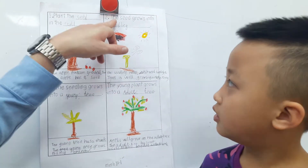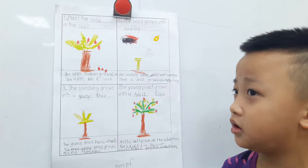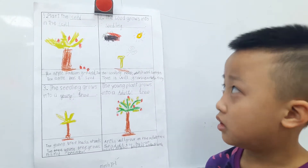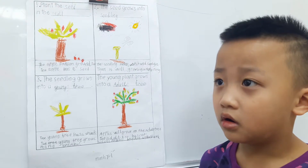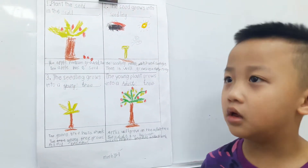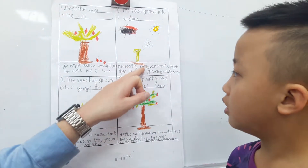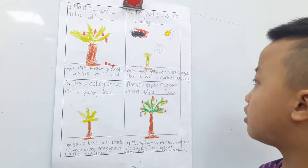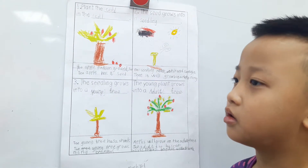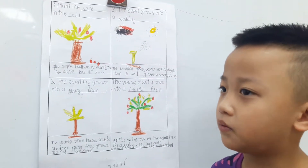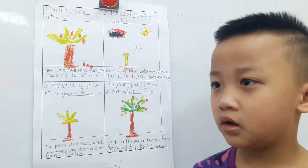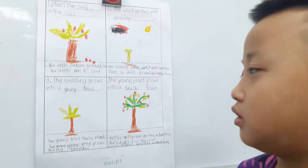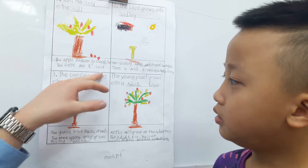A seed. Good. What does the seed grow into? A seedling. Good. What does the seedling need? It needs water to grow big and strong. Okay, what comes after a seedling? The seedling grows into a...